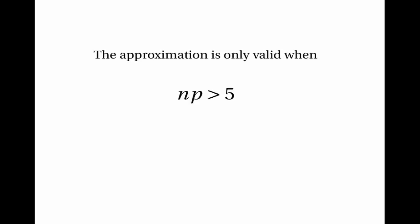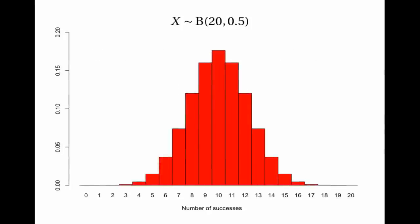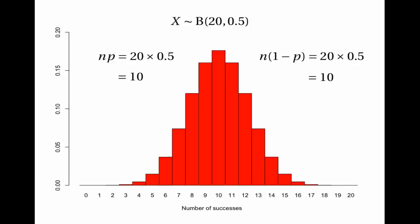There's one more thing to understand about the normal approximation to the binomial: the approximation is only valid when np > 5 and n(1-p) > 5. For example, with 20 trials and p=0.5, np is 10 and n(1-p) is also 10 — both greater than 5. Superimposing the normal distribution works well here, so it's perfectly fine to use the normal approximation in this case.